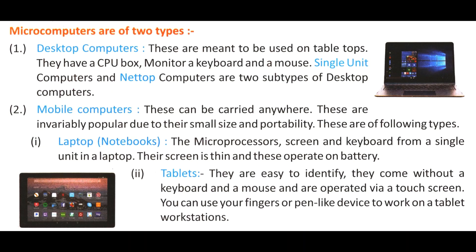There are two types of micro computers: desktop computers and mobile computers. Desktop computers are placed on a tabletop. They have a CPU box, monitor, keyboard, and a mouse, as we all see in computer labs or elsewhere.